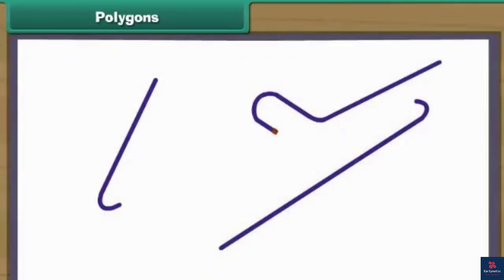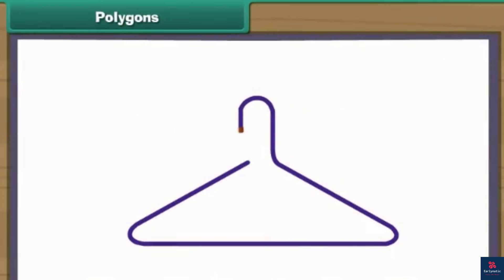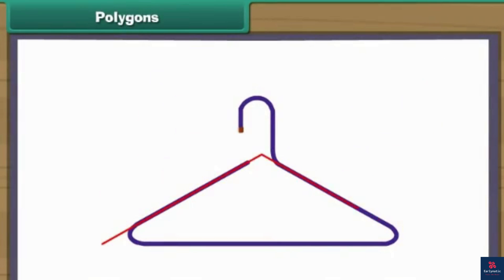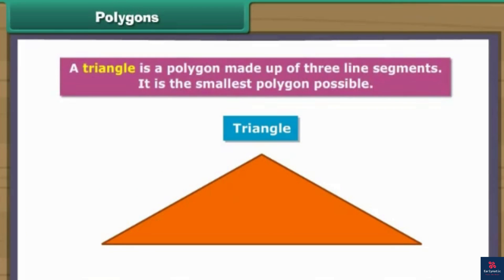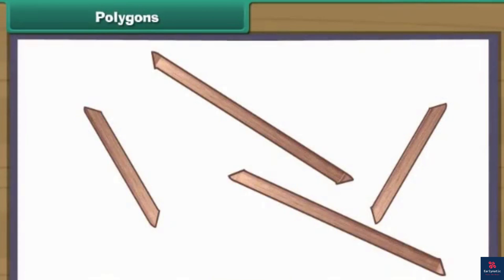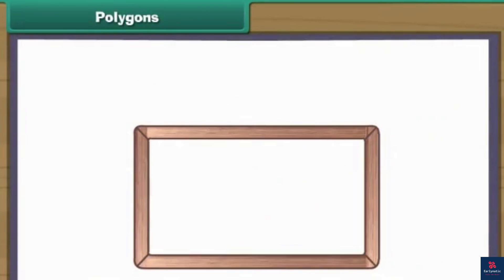We take three pieces of plastic and join them to form a towel hanger. We have created a triangle. A triangle is a polygon made up of three line segments. It is the smallest polygon possible.